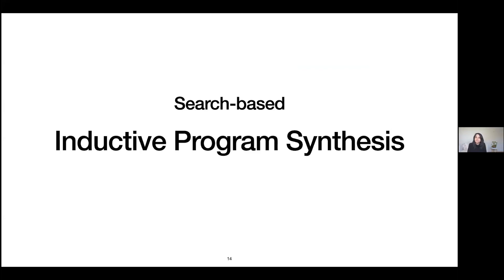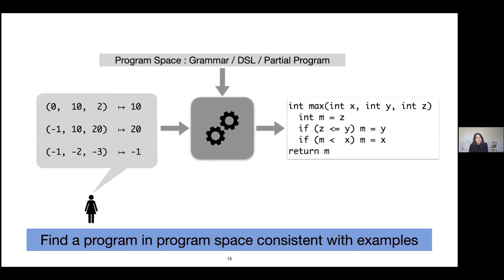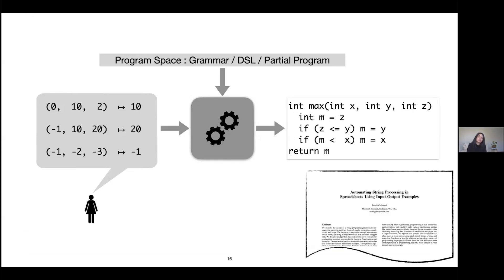In more recent inductive program synthesis approaches, we primarily view this as a search problem. The synthesizer additionally accepts a syntactic template of the space of possible programs in the form of a grammar, a domain-specific language, or what is called a partial program — a sketch, essentially an incomplete program with holes. Given this program space, we view the synthesis problem as a search to find a program consistent with the given examples. This formulation was put forth in a 2011 paper by Sumit Gulwani, one of the most impactful papers in program synthesis.